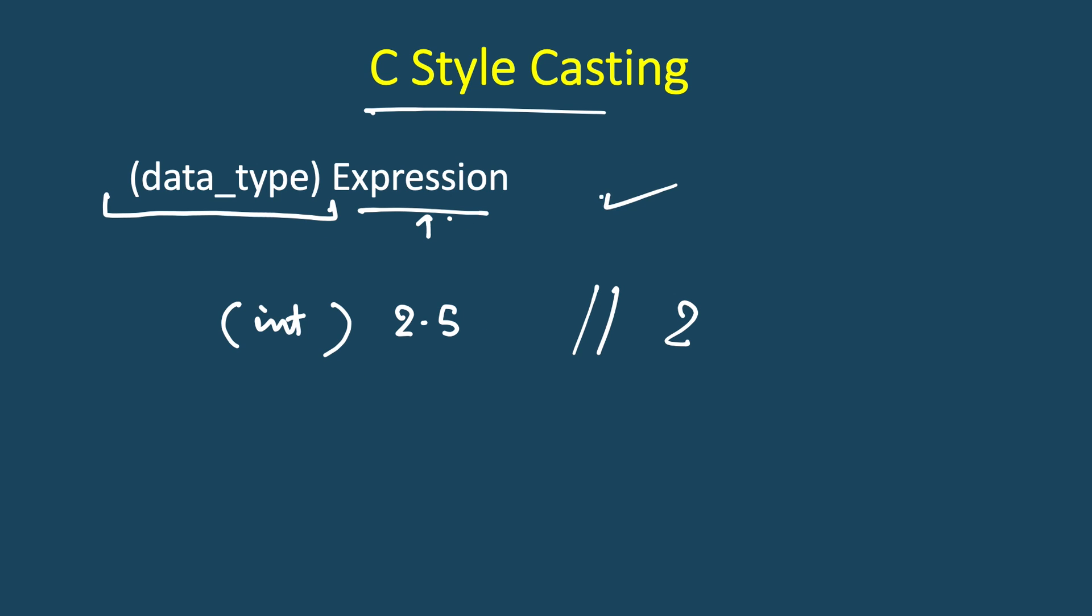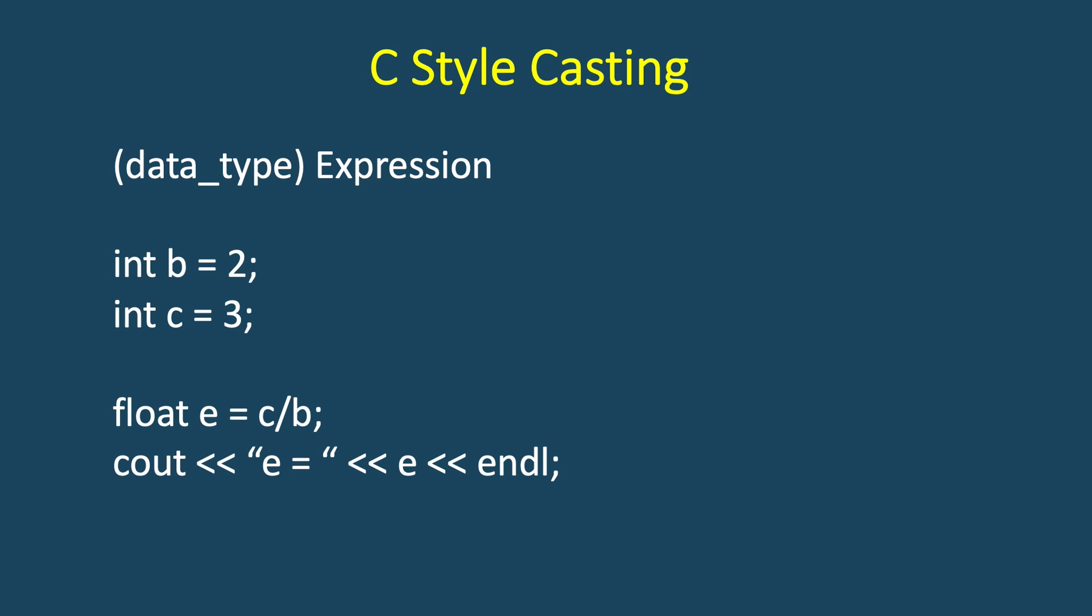So this is the syntax. And let's take the same example but this time we will modify it. So instead of this one we will change it to float, float c divided by b. So here what will happen? c, we are explicitly casting it to float, so this part is float now. b is an integer, so b will be upcasted to float.